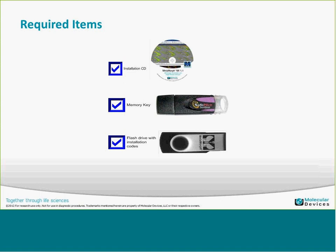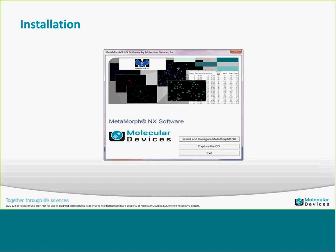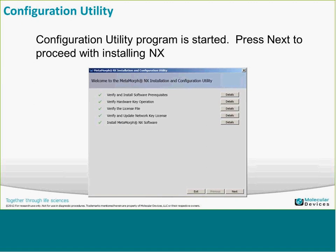There's also an installation code — a license file associated with the install rather than just a registration authorization code you type in. To start the installation, you run the autorun menu that pops up and click on 'Install and Configure Metamorph NX,' which opens up the configuration utility.